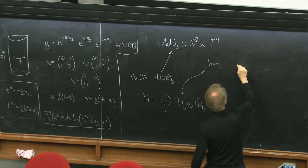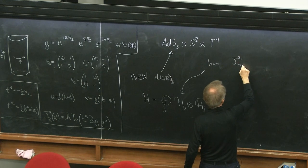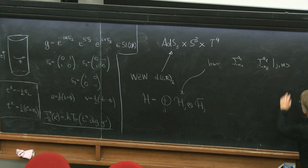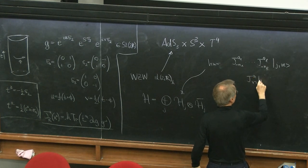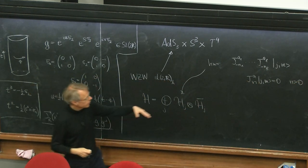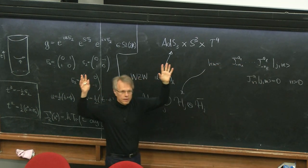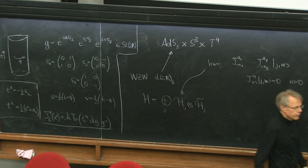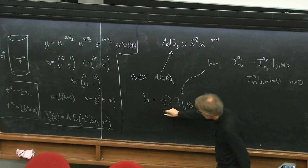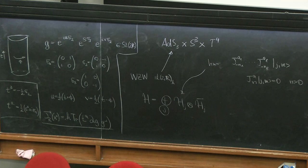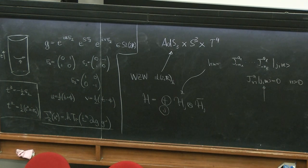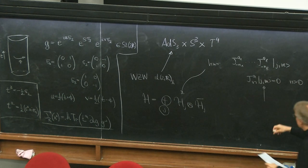A highest-weight representation is one whose Fock space is generated by negative modes acting on some ground states, where the ground states are annihilated by the positive modes. Normally you would expect your spectrum to be described by highest-weight representations on the left and on the right. The question is what should the sum over J run over, and what the label J describes are these highest-weight states.